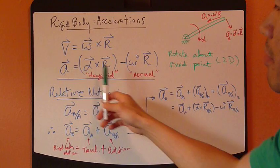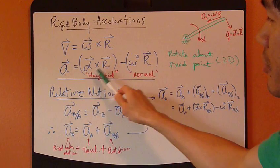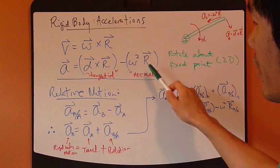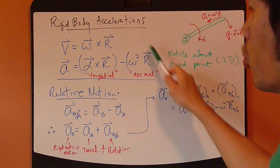Acceleration, by definition, has two terms. The first term is the tangential component. The second term is the normal component.